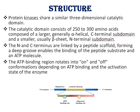Regarding the structure of protein kinases, they share a similar three-dimensional catalytic domain. The catalytic domain consists of 250 to 300 amino acids and is composed of a larger, generally alpha-helical C-terminal subdomain and a smaller, usually beta-sheet N-terminal subdomain.